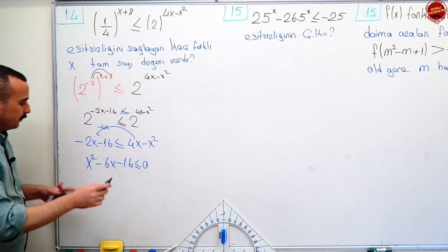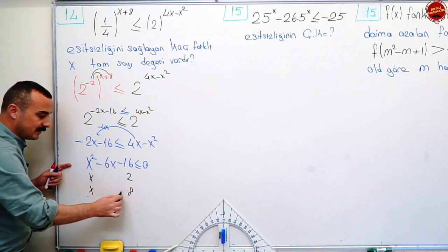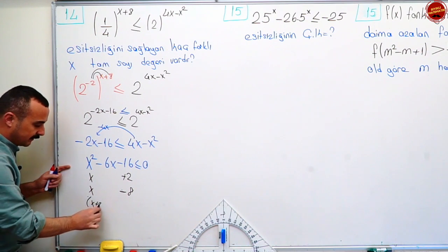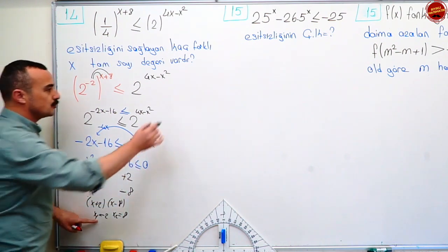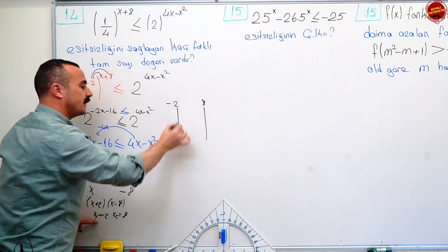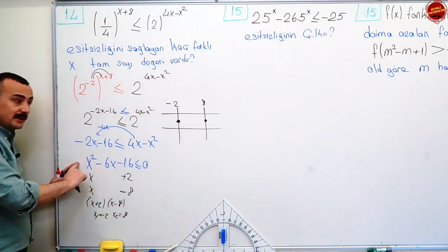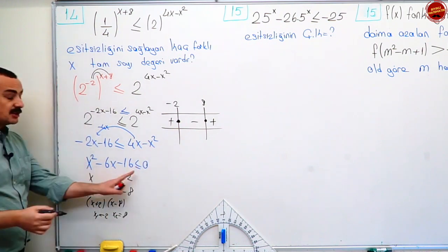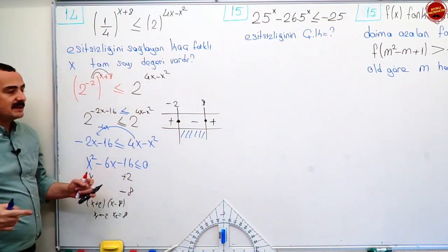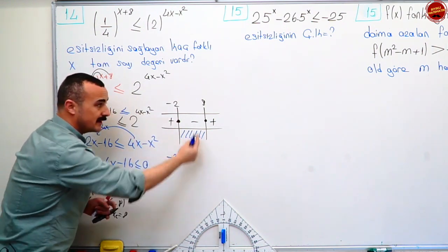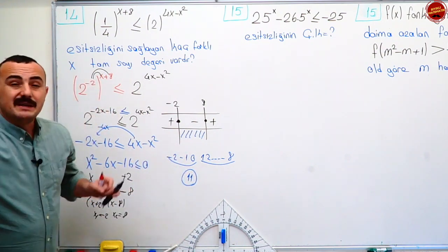Karşı taraf sıfır artık. Çarpandan ayırıp köklerini bulacağım. On altı: iki ile sekizin çarpımı. Toplamların eksi altıyı verebilmesi için eksi sekiz, artı iki. Ne oldu? x artı iki çarpı x eksi sekiz. Birinci kök eksi iki, ikinci kök sekiz. Tabloyu yap: küçük kök eksi iki, büyük kök sekiz. Eşitlik vardı, içlerini dolu yapıyorum. En büyük dereceli terimin işareti artı. Artı, eksi, artı. Sıfırdan küçük eşit olduğu yer tarandı. Eşitsizliği sağlayan kaç farklı x tam sayı değeri var: eksi iki, eksi bir, sıfır — üç tane; bir iki … sekize kadar sekiz sayı — sekiz tane. Toplam on bir tane tam sayı var.